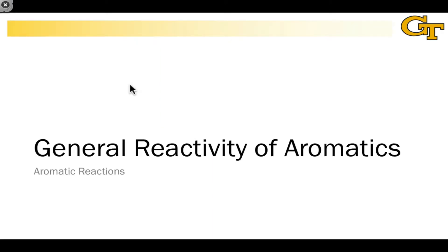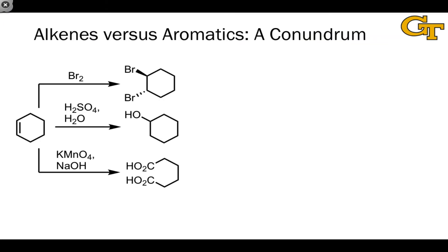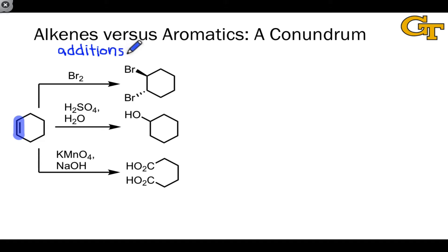We're going to begin with a lesson on the general reactivity of aromatics, keeping things general. To start, I wanted to note the correspondence between alkenes and aromatics. Both are characterized by carbon-carbon double bonds, and the alkene pi bond can act as a nucleophile toward a variety of electrophilic reagents and engage in addition reactions, such as the addition of Br2, halogenation, hydration catalyzed by acid, and even oxidation reactions like 1,2-dihydroxylation or oxidative cleavage.